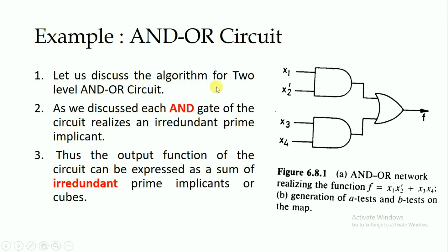Let us discuss the algorithm for the two-level AND-OR circuit. Each AND gate of the circuit realizes an irredundant prime implicant. Here within this function, x1·x2' is a prime implicant and x3·x4 is also a prime implicant. The output function of the circuit can be expressed as a sum of irredundant prime implicants or cubes — that is, no prime cube is repeated anywhere within the boolean function.